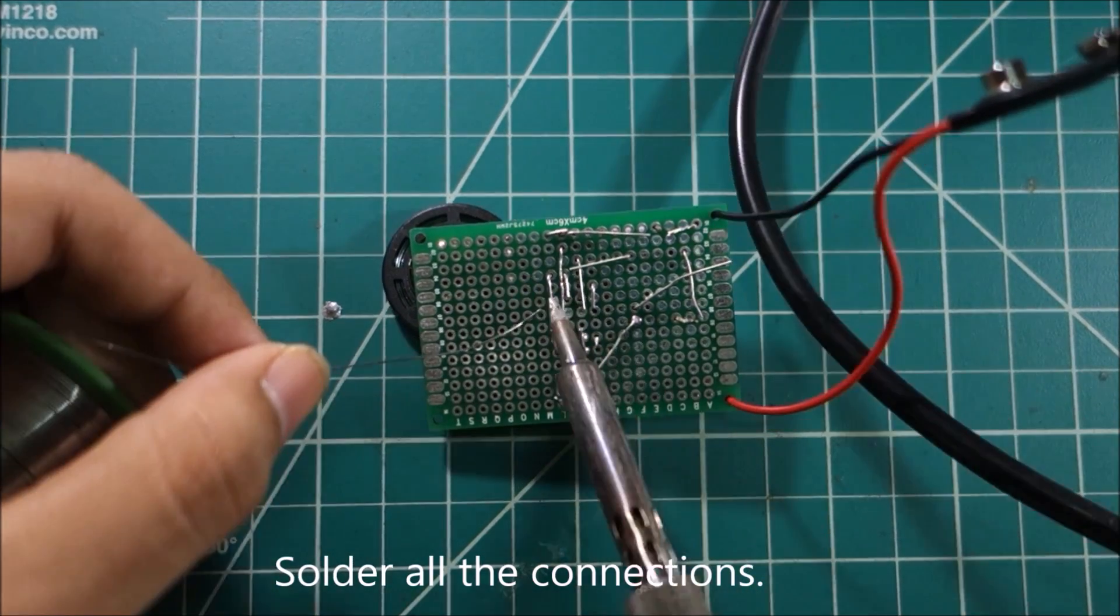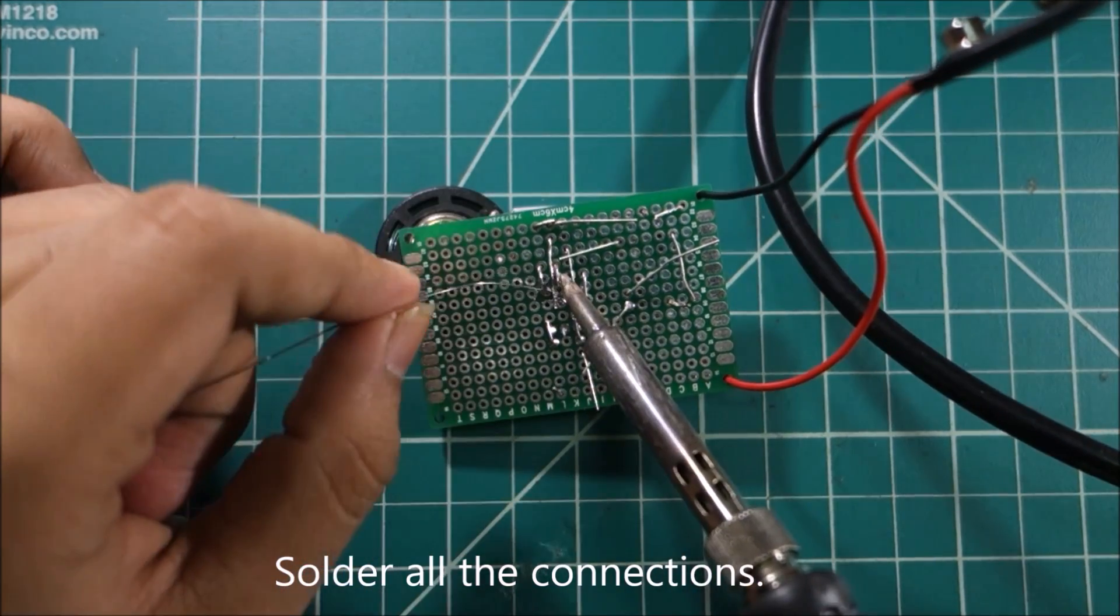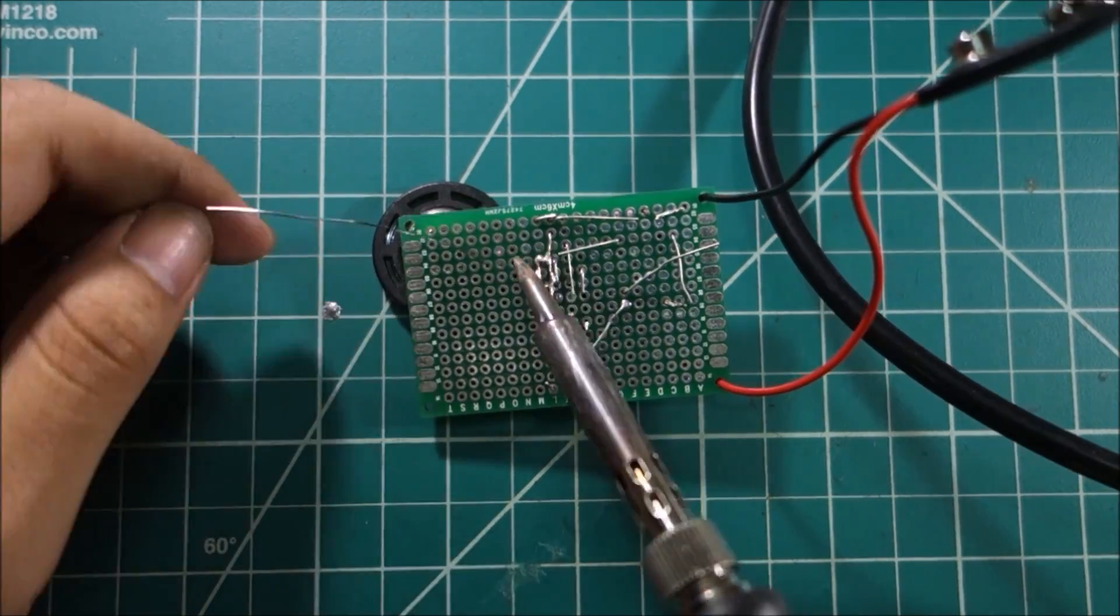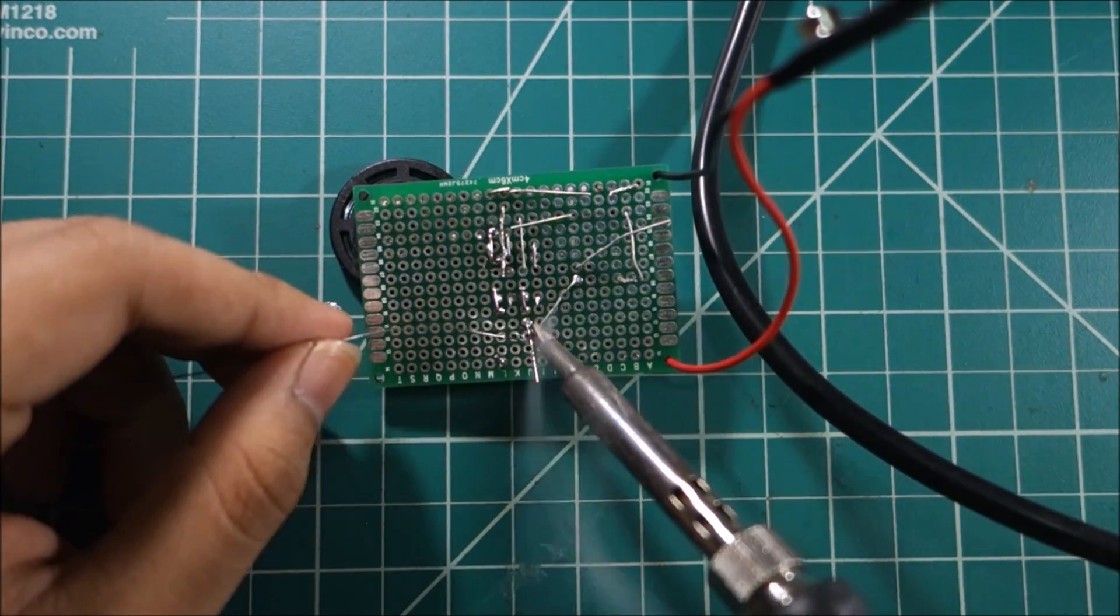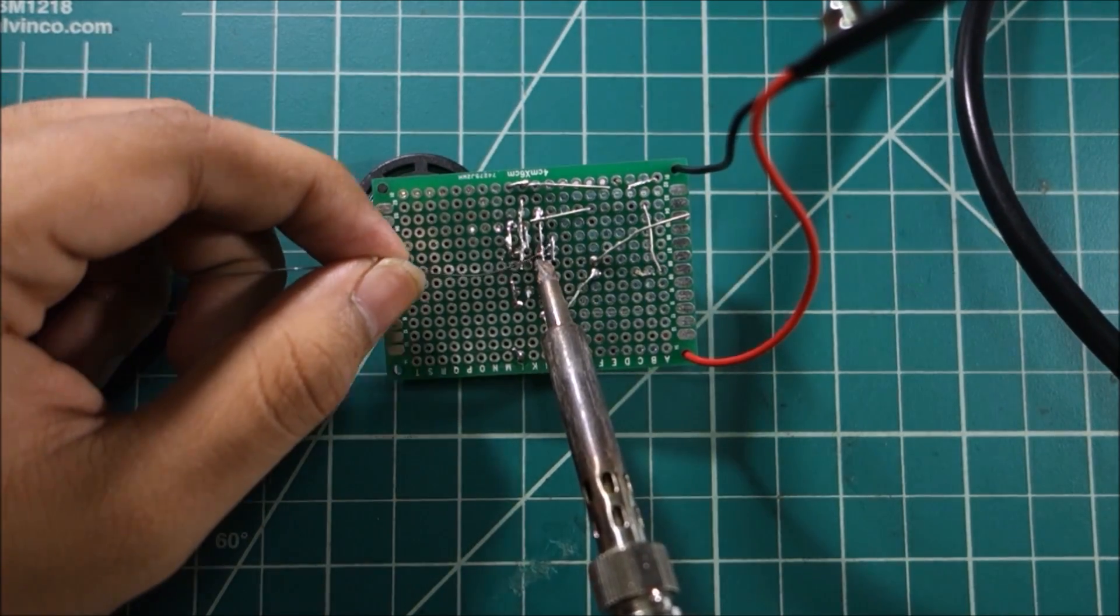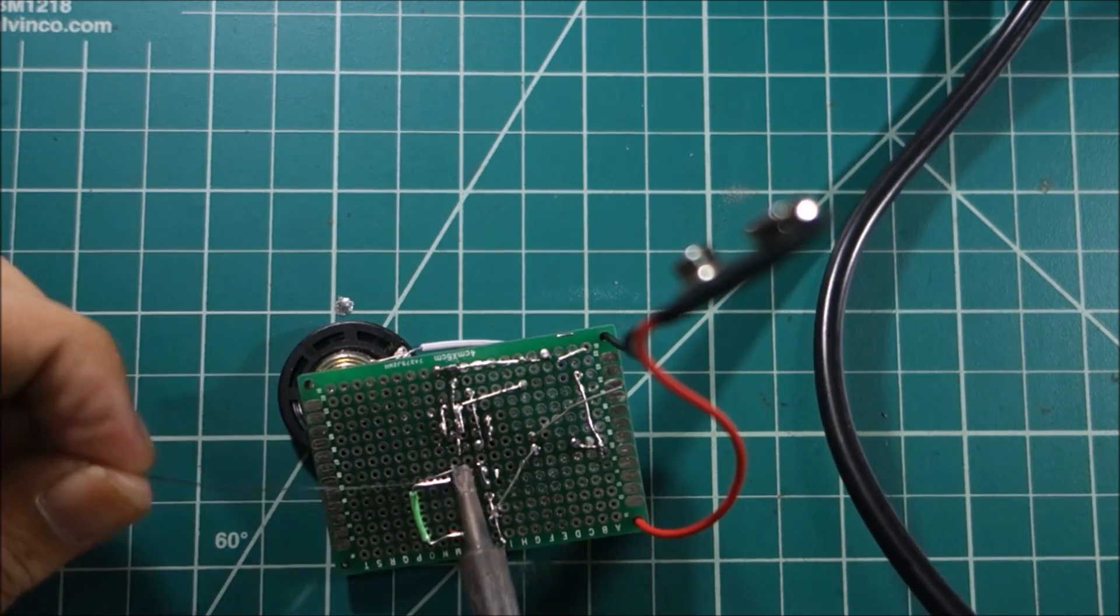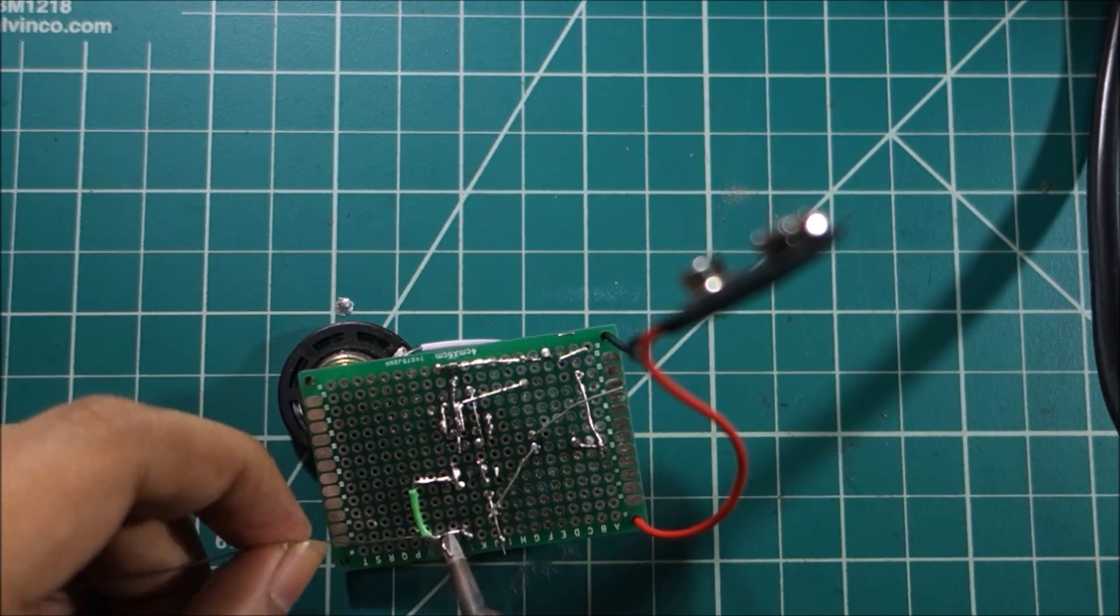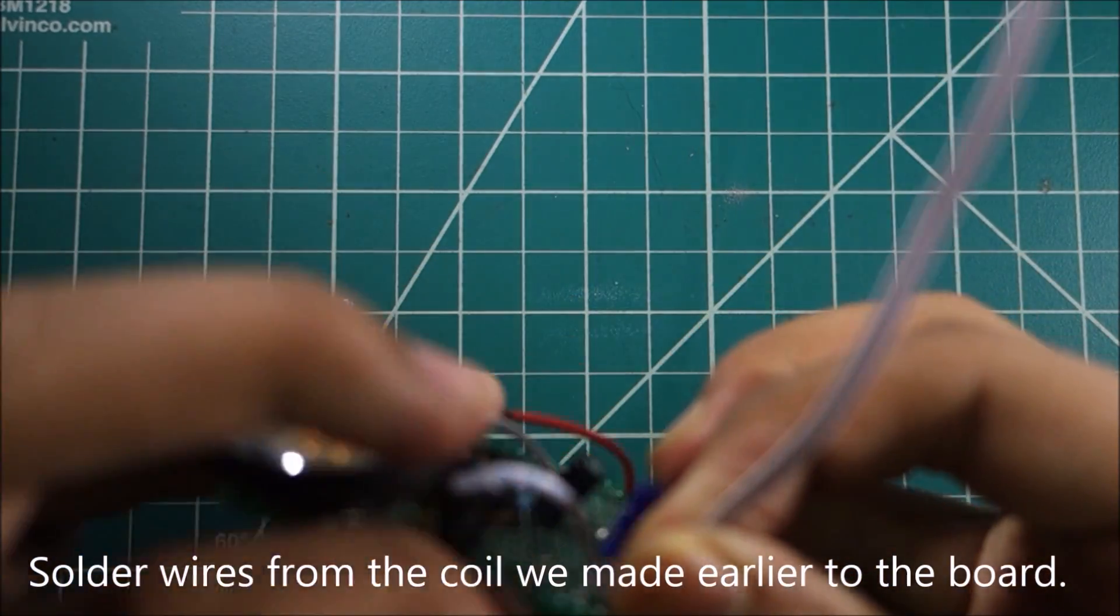Now solder all the connections you have so far. After soldering the connections, be sure to clip off extra leads using pliers or scissors. Solder the wires from the coil we made earlier to the board.